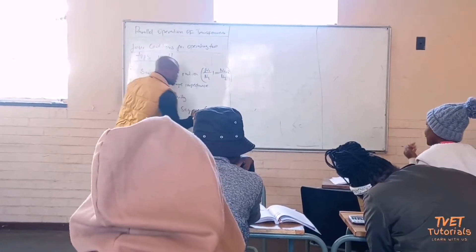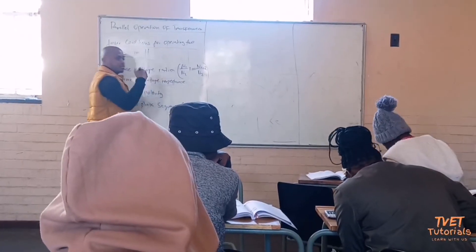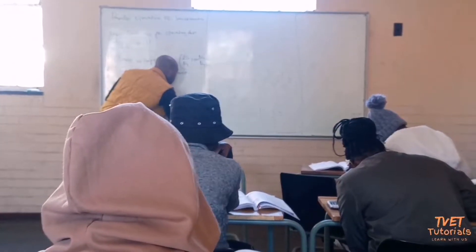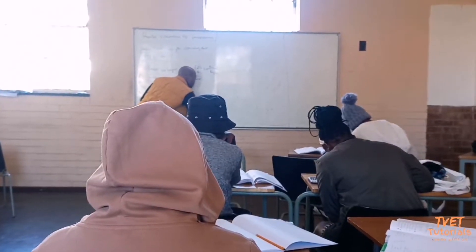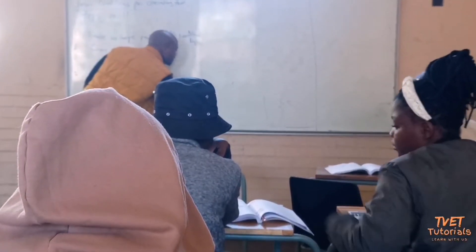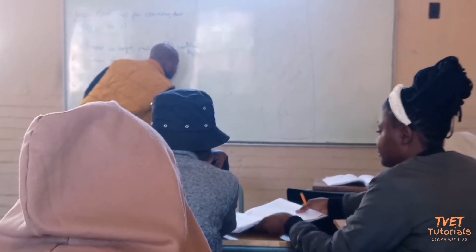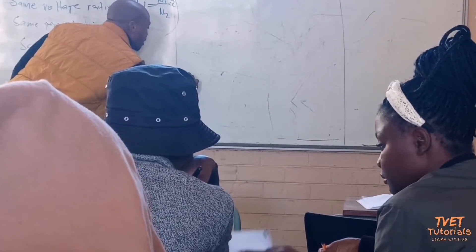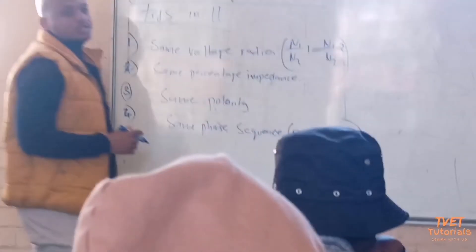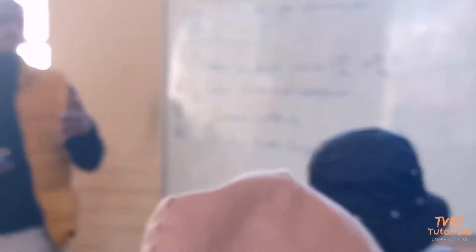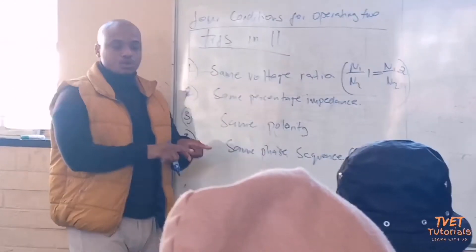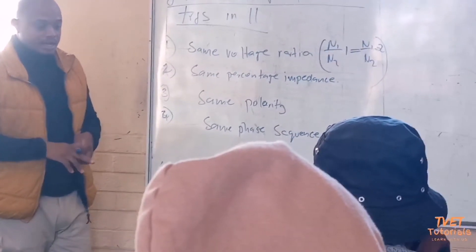What I mean by that is: if one transformer has a phase sequence of R, Y, B, it means the other transformer must have the same sequence of R, Y, B. Those are the four conditions that need to be met when we operate two transformers in parallel.